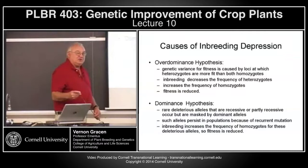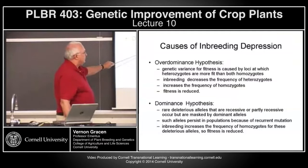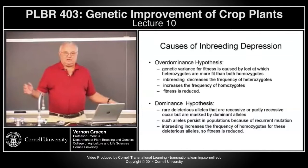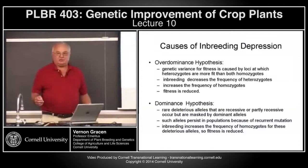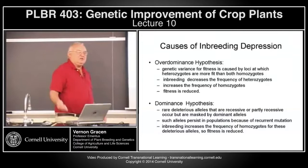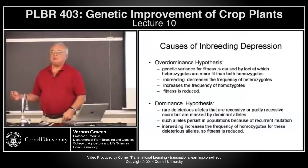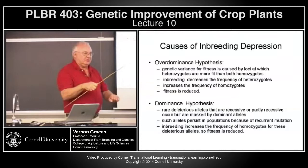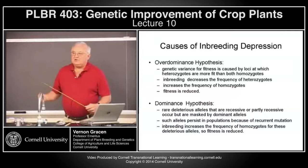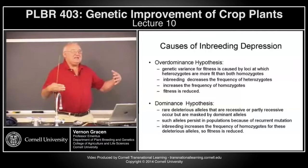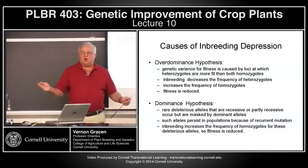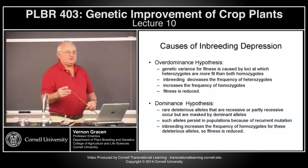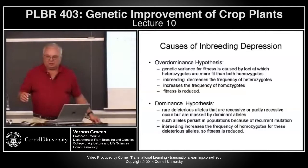The dominance hypothesis — more commonly believed — says that rare deleterious alleles that are recessive occur, but they're masked by dominant alleles in outcrossing species. They persist in populations because there's always a recurrent rate of mutation producing more deleterious alleles. Inbreeding increases the frequency of homozygotes, uncovering those recessive alleles that had been masked by dominant genes in a heterozygous condition. Cross-pollinated species carry a lot of hidden deleterious alleles — as we self them, those alleles show up. That load of hidden genetic deleterious recessive alleles is called the genetic load on that population.